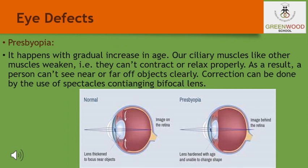Presbyopia is a defect where the power of accommodation of the eye decreases with aging. For most people, the near point gradually recedes away, making it difficult to see nearby objects comfortably without corrective eyeglasses. It arises due to gradual weakening of the ciliary muscles and diminishing flexibility of the eye lens. Sometimes a person may suffer from both myopia and hypermetropia; such people often require bifocal lenses. A common bifocal lens consists of both concave and convex portions — the upper portion is a concave lens facilitating distant vision, and the lower part is a convex lens facilitating near vision.